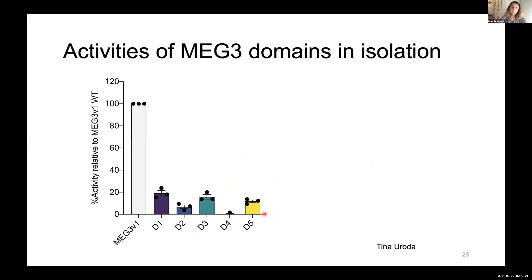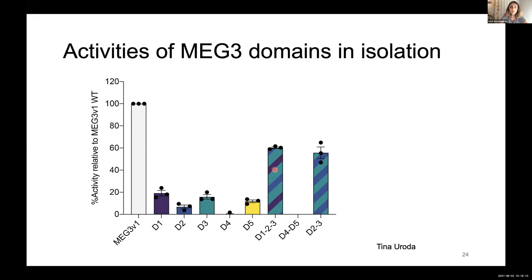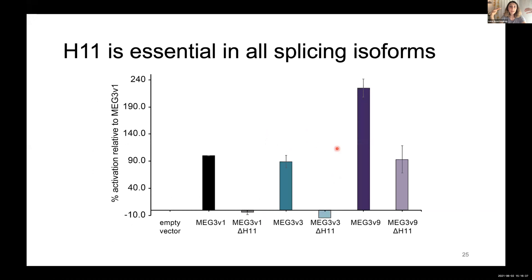My colleague Tina assessed which individual MEG3 domains could drive p53-dependent gene expression. None of the domains in isolation was able to do so; however, in all cases where there was a combination of domains 2 and 3, a minimal level of activation was observed, suggesting that the minimal activation core of MEG3 resides between domains 2 and 3. We then mutated all motifs in domains 2 and 3, and deletion of helix 11 from either splicing isoform had a deleterious effect on the ability to drive p53-dependent gene expression.